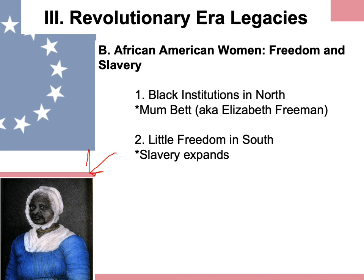Over time, slavery became self-perpetuating — you purchased a slave, but the slave woman who had a child: that child was born into slavery. Slave owners forced the slaves to reproduce and thereby had essentially a free slave baby, making it cheap to sustain the slave labor force.